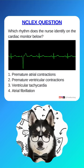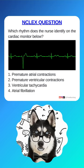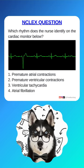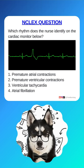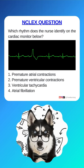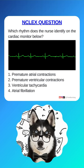Which rhythm does the nurse identify on the cardiac monitor below? 1. Premature atrial contractions. 2. Premature ventricular contractions. 3. Ventricular tachycardia. Or 4. Atrial fibrillation.